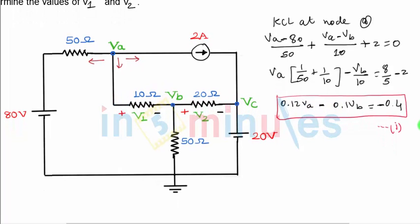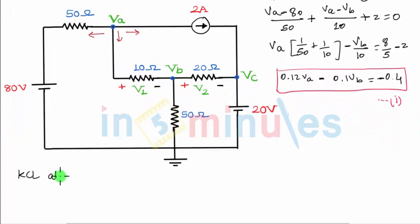So let us now write down KCL at the second node, KCL at node B. So this is my node B and like always let's define three outgoing currents, number one, number two and number three.